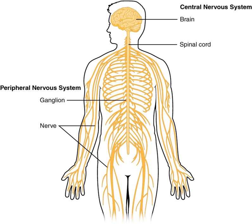Planarians, members of the phylum Platyhelminthes, have the simplest clearly defined delineation of a nervous system into a CNS and a PNS. Their primitive brains, consisting of two fused anterior ganglia and longitudinal nerve cords, form the CNS, while the laterally projecting nerves form the PNS. A molecular study found that more than 95% of the 116 genes involved in the nervous system of planarians, which includes genes related to the CNS, also exist in humans. Like planarians, vertebrates have a distinct CNS and PNS, though more complex than those of planarians.